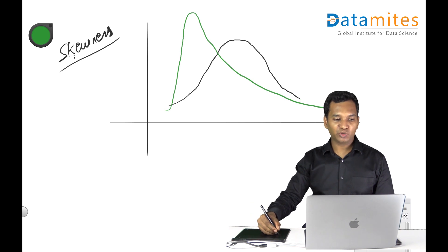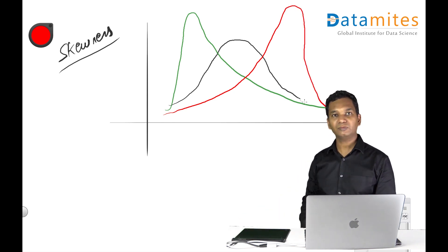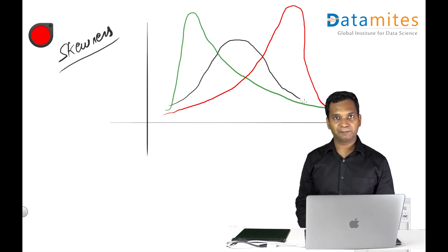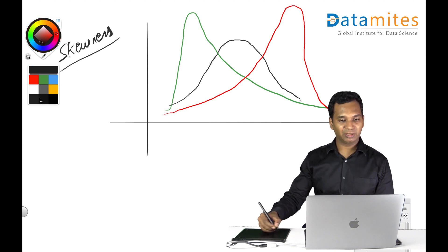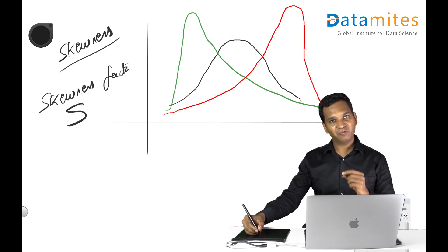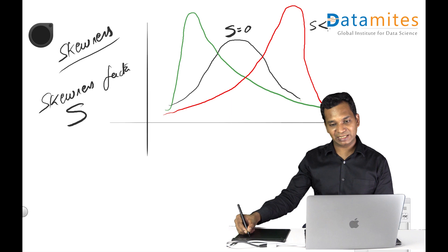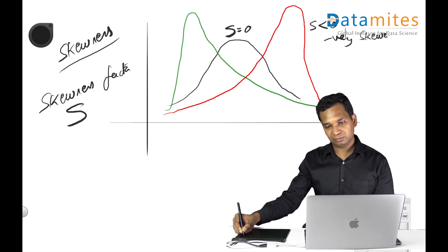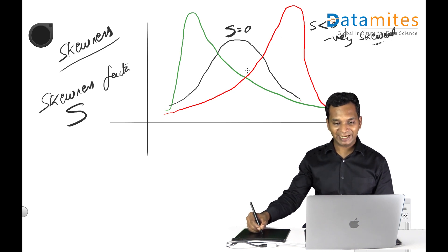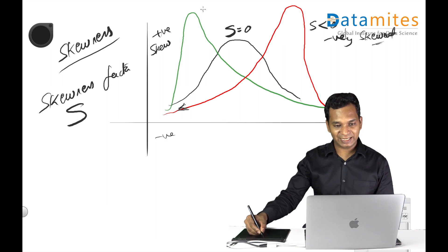You could also have a distribution which is a reverse of that. These distributions are called skewed distributions, and the measure for this is called the skewness factor, represented by capital S. For a perfectly normal distribution, the S value equals zero. For a negatively skewed distribution, S is less than zero — the tail of the distribution points towards the negative side. For a positively skewed distribution, the tail goes towards the positive side.